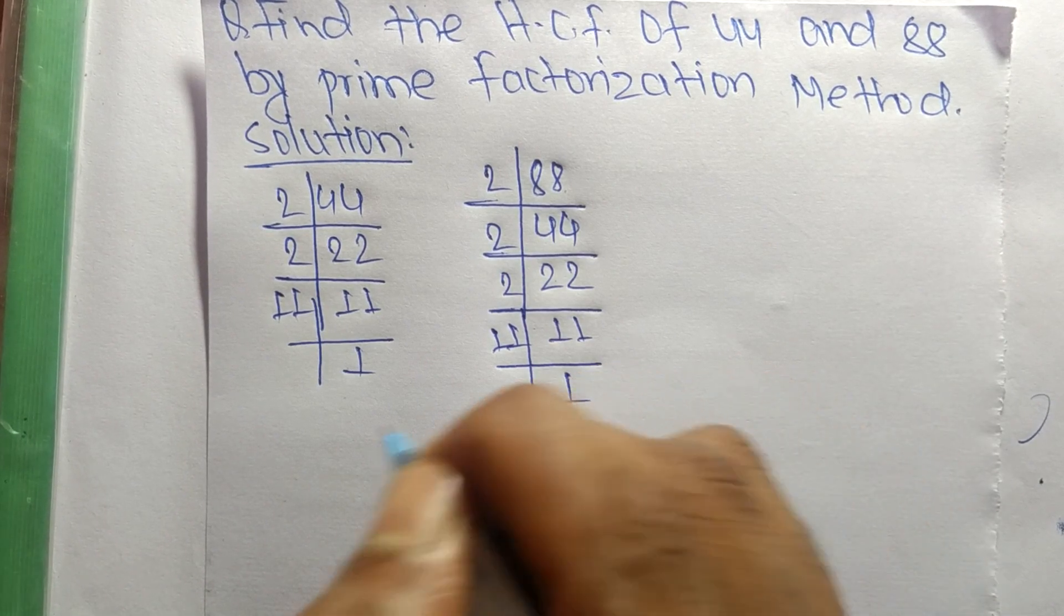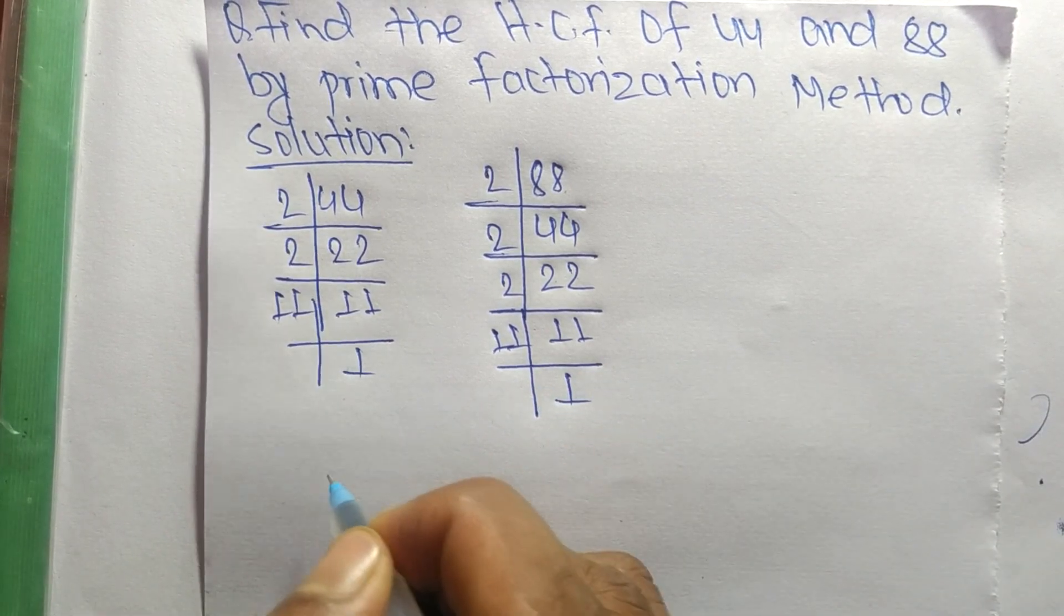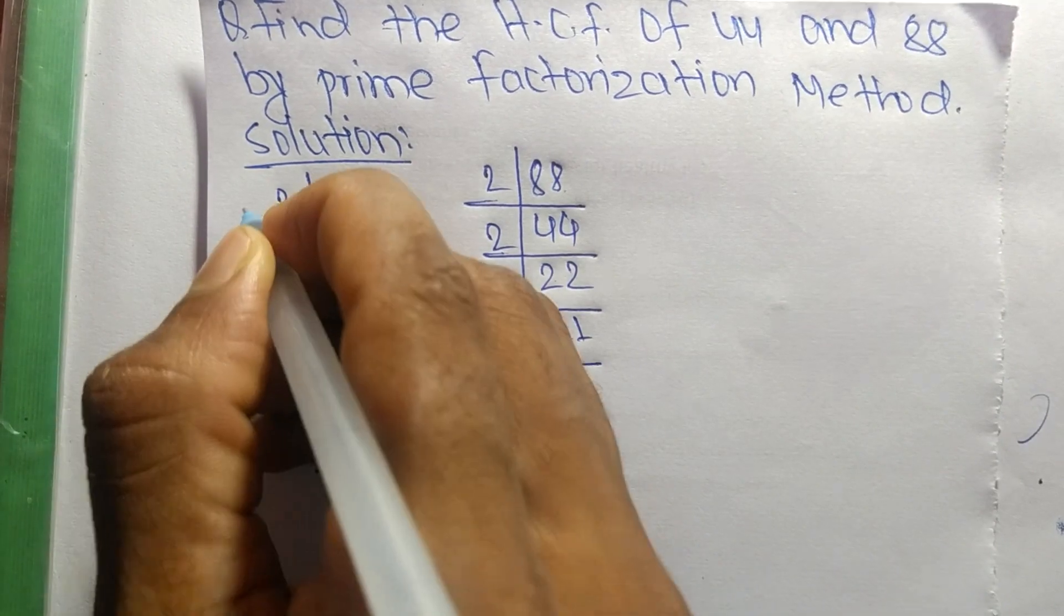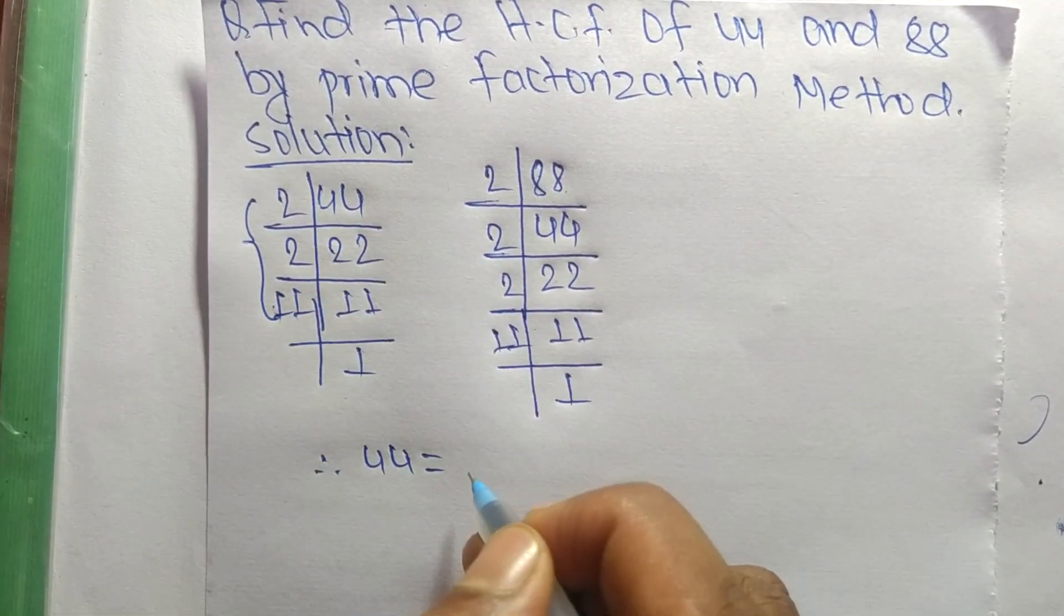Now from these prime factors, we can write 44 is equal to 2 times 2 times 11.